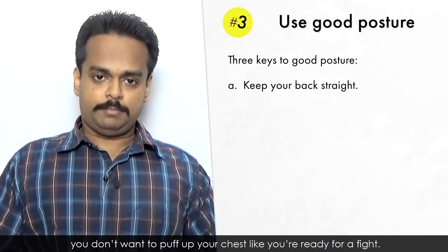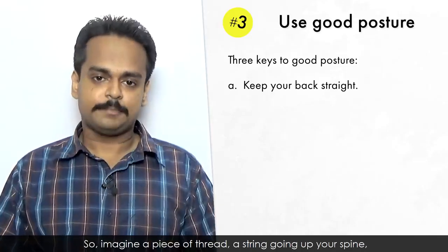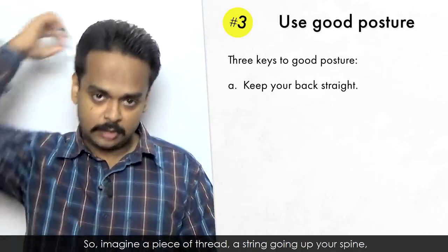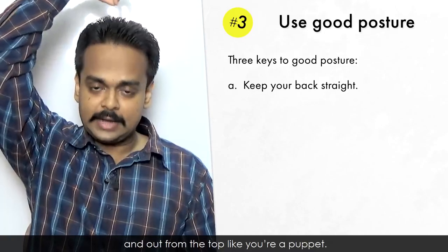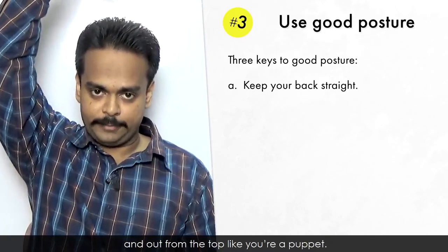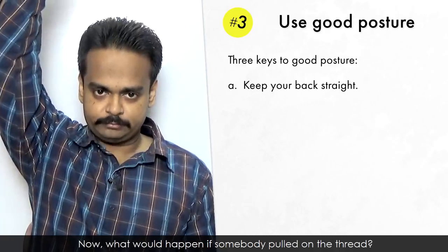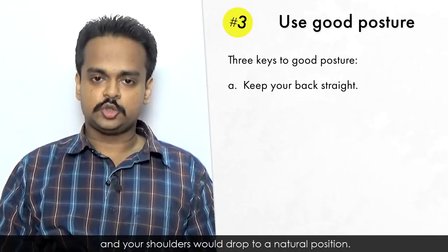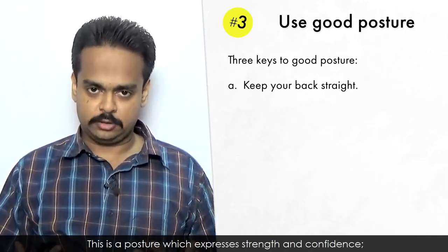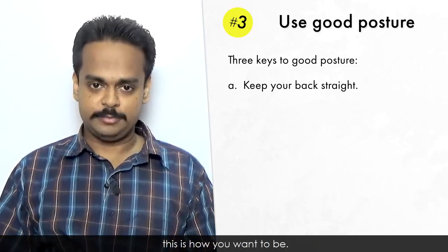At the same time, you don't want to puff up your chest like you're ready for a fight. So imagine a piece of thread – a string going up your spine, up through the back of your head, and out from the top like you're a puppet. Now what would happen if somebody pulled on the thread? Your back would straighten and your shoulders would drop to a natural position. This is a posture which expresses strength and confidence. This is how you want to be.